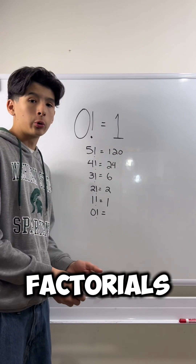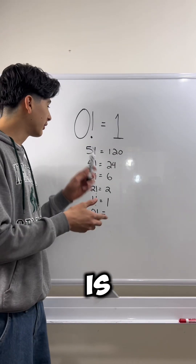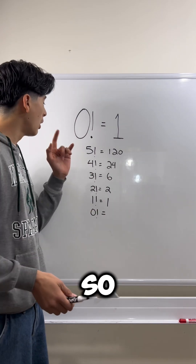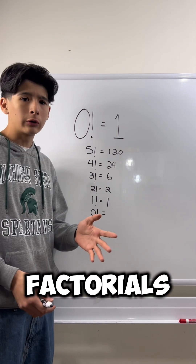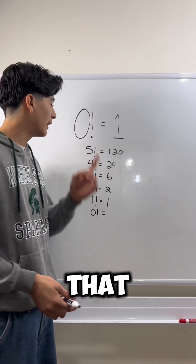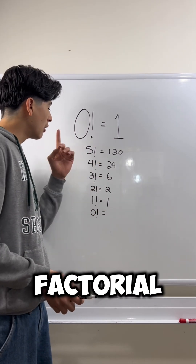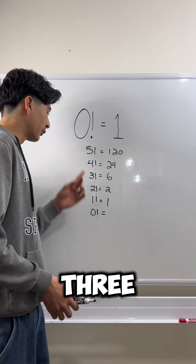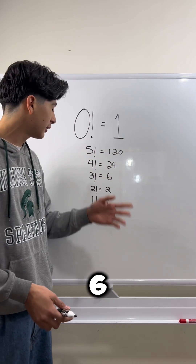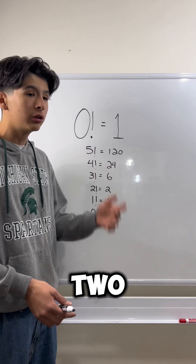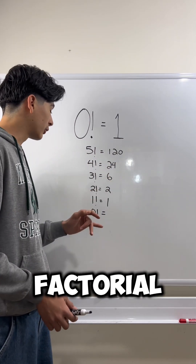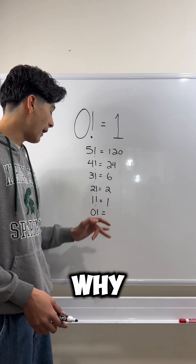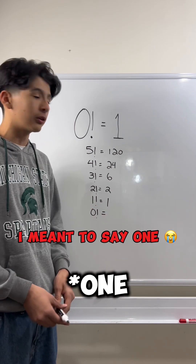Now that we know what factorials are, here is a list of decreasing factorials. We know that 5 factorial is 120. 4 factorial is 24, 3 factorial is 6, 2 factorial is 2, 1 factorial is 1, and we're going to find out why 0 factorial is 1.